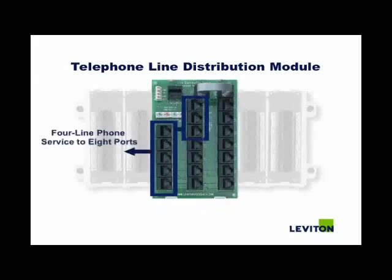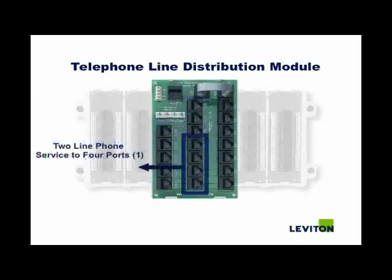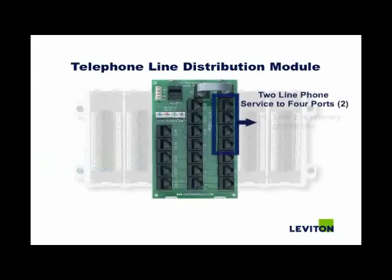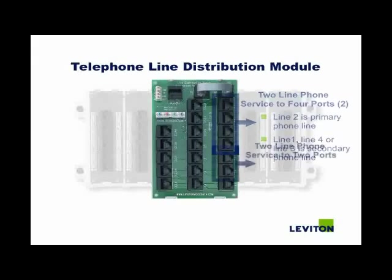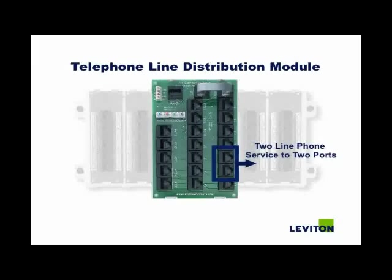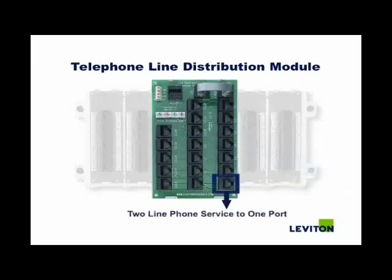The module provides four-line service to eight ports. Lines one through four provide two-line phone service to four ports, where line one is the primary and line three or four is the secondary phone line respectively. Line two can serve as primary with line one, three, or four as secondary. Two-line phone service to two ports uses line three as primary and line four as primary with line one as secondary.